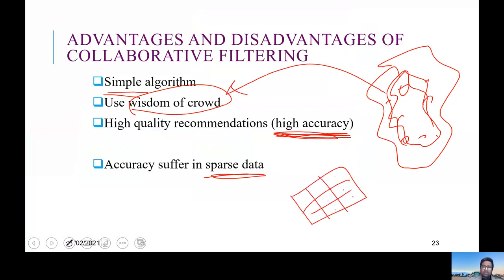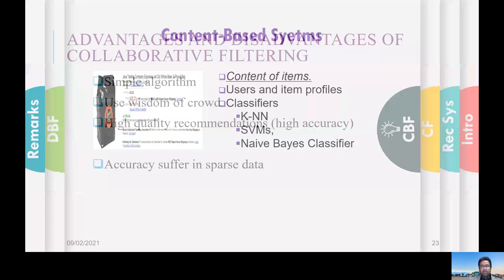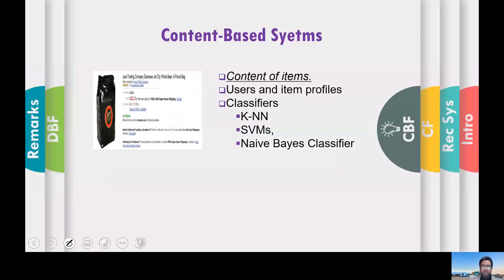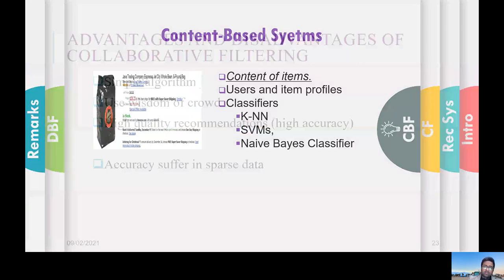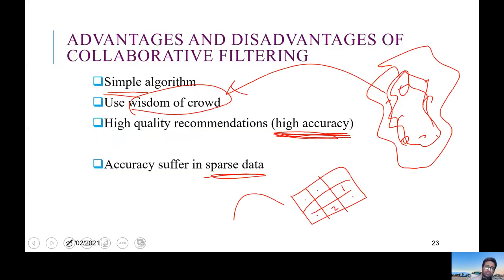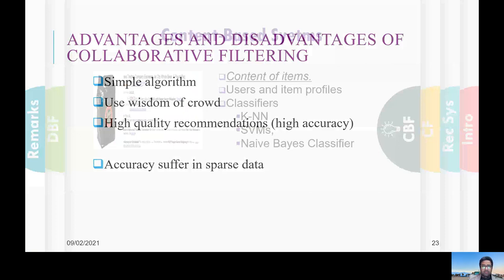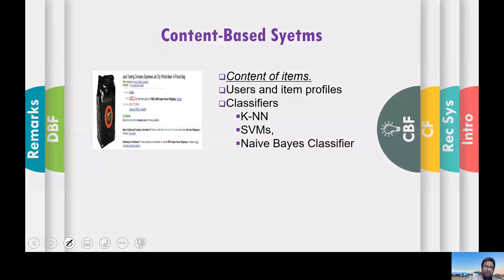However, in sparse data where you have a lot of missing values, the accuracy of those matrices might suffer. In sparse settings, you usually switch to the second type, which is content-based filtering.